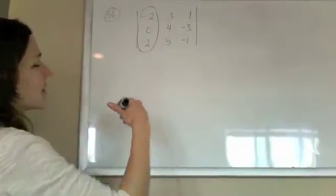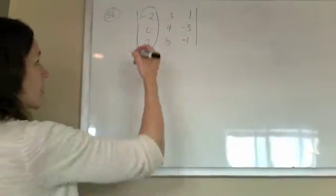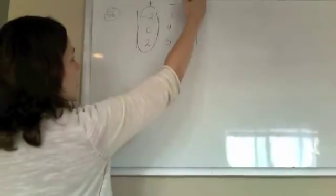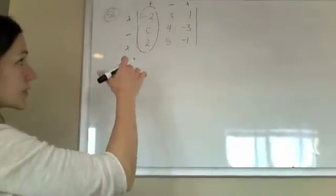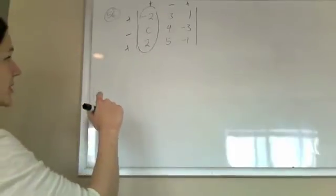And then there's a sign matrix that goes along with this, it alternates plus, minus, plus, starting with the pluses in the corners, so hopefully this will make sense in a sec.